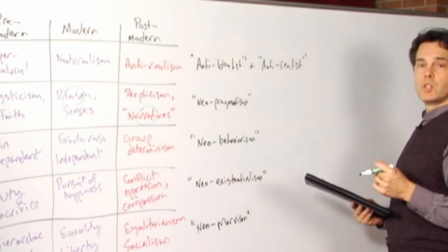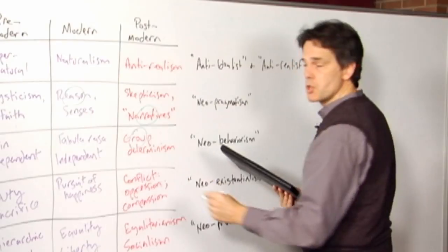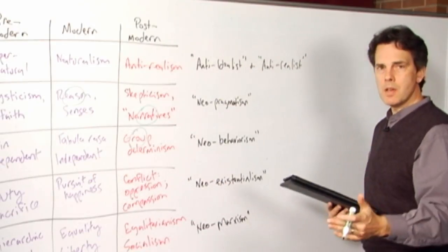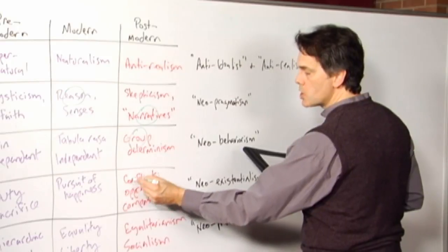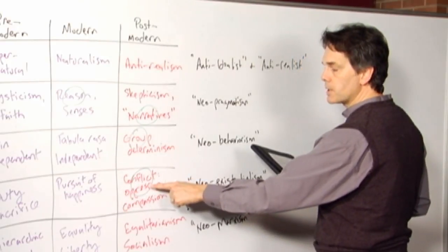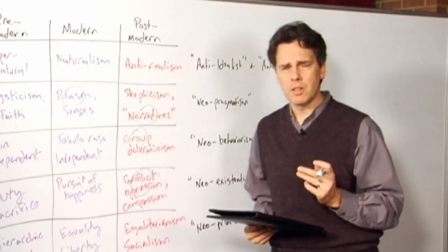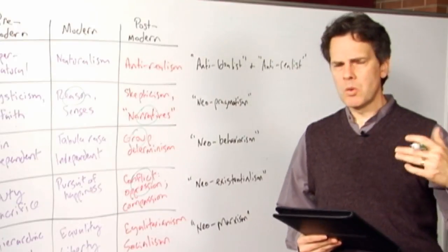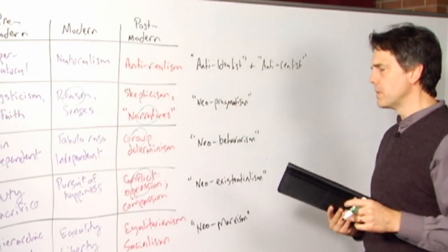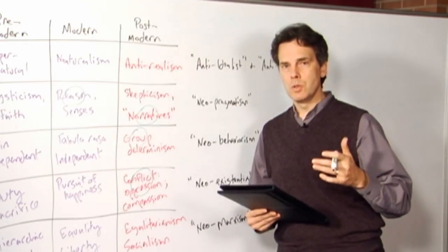Now notice what Dworkin is doing here is defining individuals by their group membership. You are a male, or you are a female, and arguing that the relationship between those two groups is one of conflict and oppression. Males and females, contrary to the modern claim that it's all about women's empowerment and women's liberty, and that we're making progress toward women's equality.